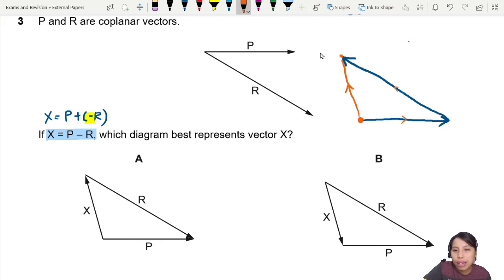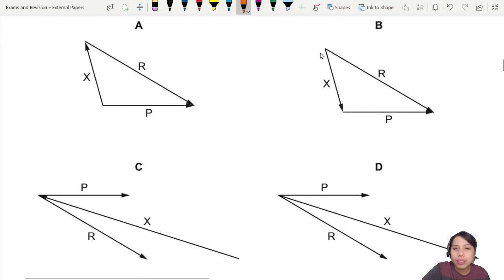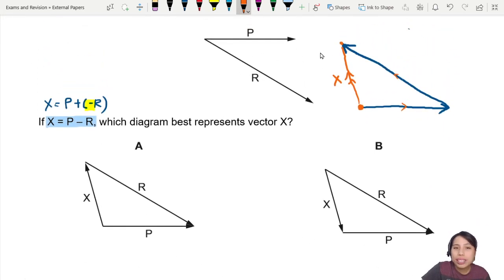So my resultant vector which is x should start here, follow, follow, follow and end here. So this will be my resultant x. So I need to look for an x among these arrows that point in that direction. Straight away I can see B is not going to be correct. How about A? A looks plausible.